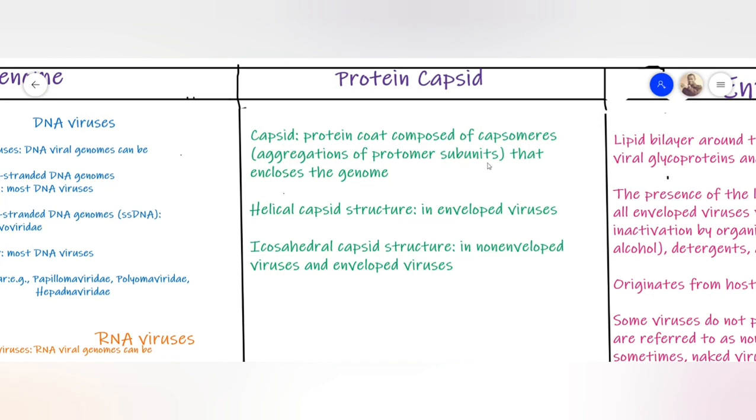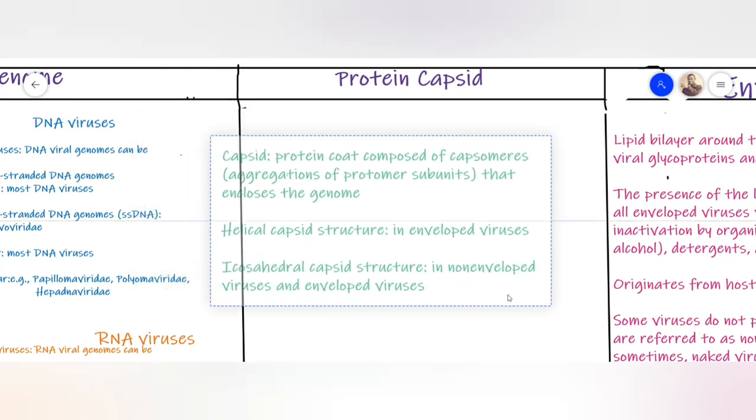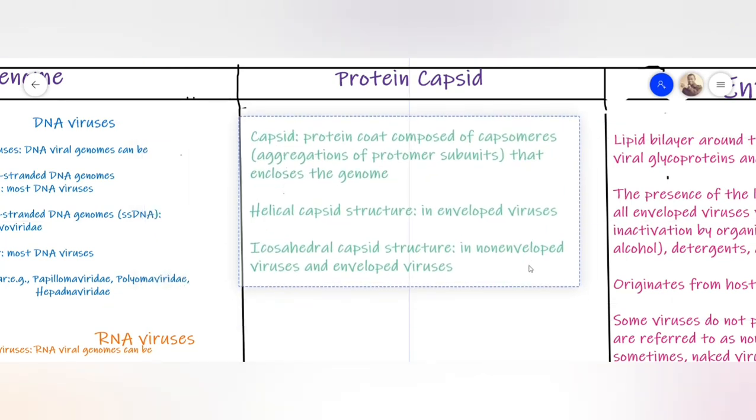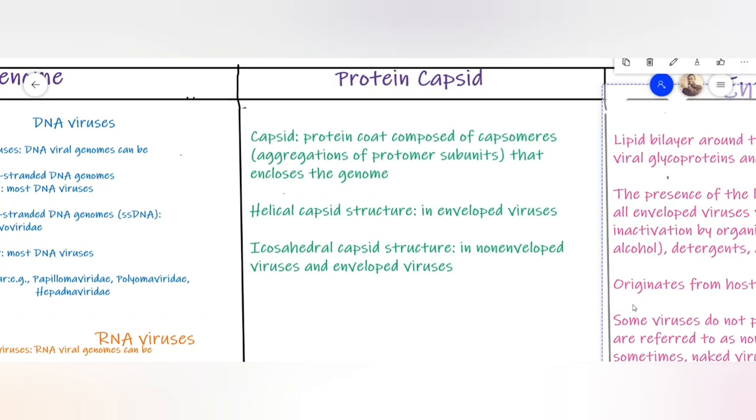The protein capsid is composed of capsomeres, which are aggregations of protein subunits that enclose the genome. They can either be helical or icosahedral. Helical capsid are found in enveloped viruses. Icosahedral capsid structure is found in enveloped viruses and also in non-enveloped viruses. Non-enveloped is also known as naked.